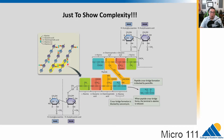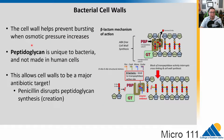Peptidoglycan is unique to bacteria, so of course we're going to target it with antibiotics. There's a bond that forms that we target with penicillin, our first antibiotic. We'll talk a bit about how peptidoglycan is made — I want to show you a mechanism of how an antibiotic actually works. We're talking about a group of antibiotics called the beta-lactams. These are penicillin and related antibiotics, and they disrupt the forming of peptidoglycan bonds.